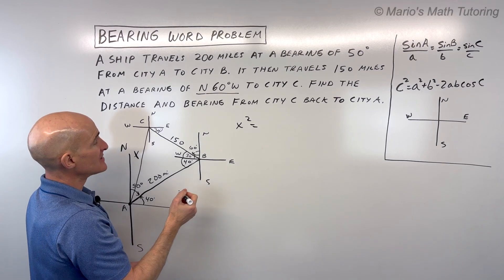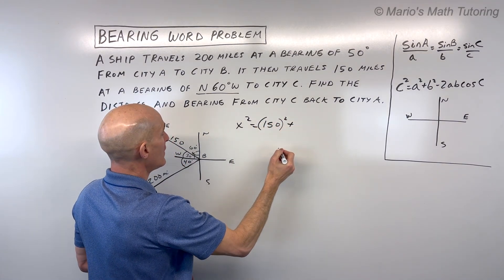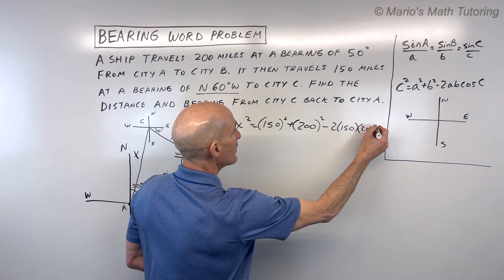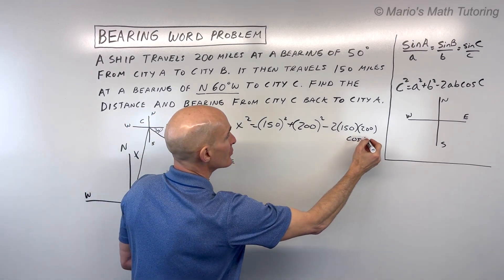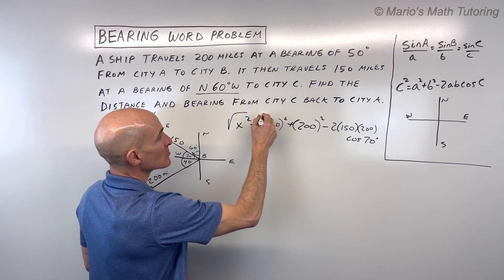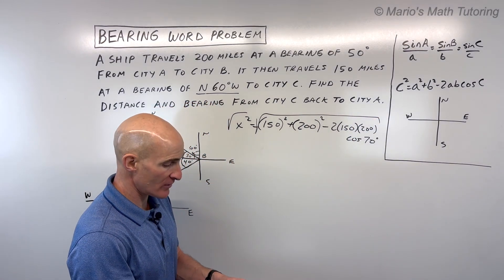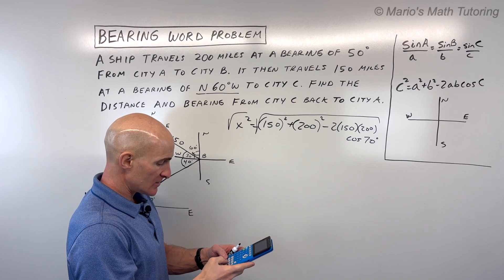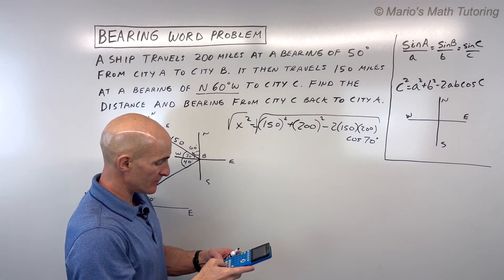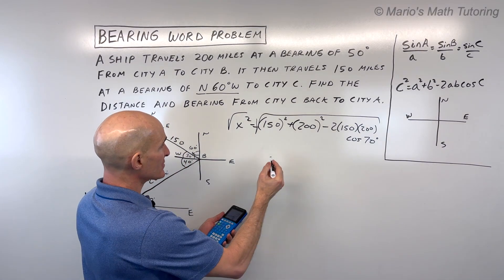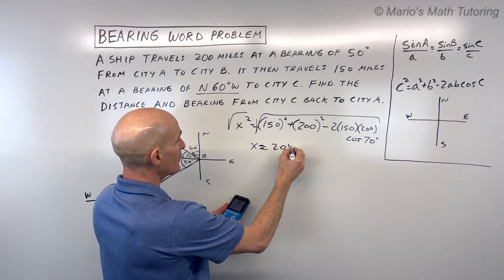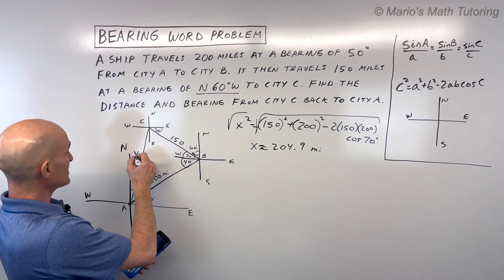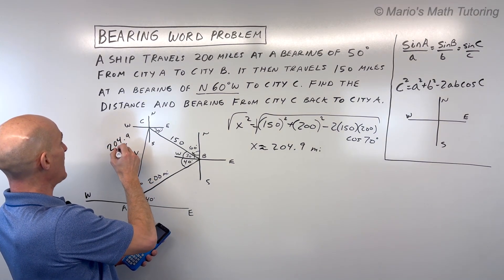So let's go ahead and do that. I'm just going to call this distance x. So we're going to say x squared is equal to 150 squared plus 200 squared minus 2 times 150 times 200 times the cosine of the angle in between, which is 70 degrees. Now, we don't want x squared, we just want x. So let's take the square root of both sides. And let's go to the calculator and see what we get for that. This is going to be square root of 150 squared plus 200 squared minus 2 times 150 times 200 times the cosine of 70 degrees. Make sure your calculator is in degrees. So I'm getting about, I'm just going to round to the nearest tenth, approximately 204.9 miles. So that is going to be this distance right here.